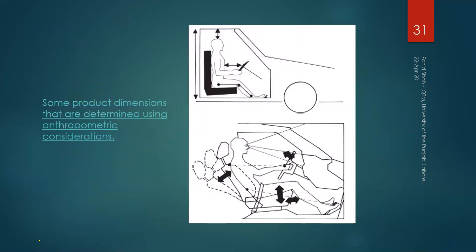Here are some dimensions related to the car interior. For example, to specify the interior height, we need to know the seated height of users and based on that we can give some clearance above the head. We can also decide the positioning of the accelerator, brakes, and steering. In order to decide these dimensions we need the relevant anthropometric data, which can be useful to design the range of adjustability of different parts of the car.